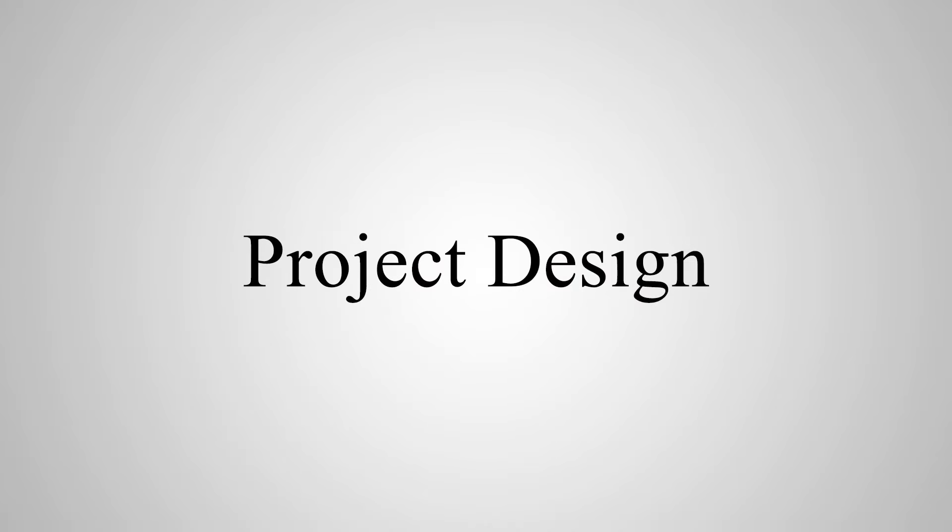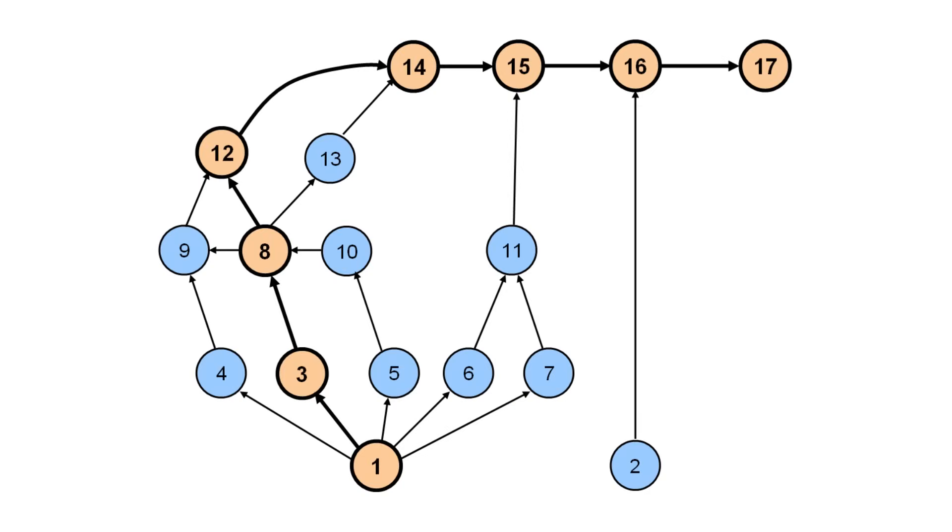The second part of the book is about project design. With the architecture at hand, you can identify the various activities in the project, and even their dependencies. This enables you to model the project as a network of activities, and then find the longest path from the start to finish, called the critical path.